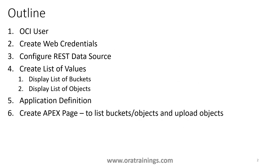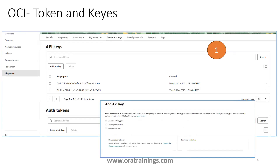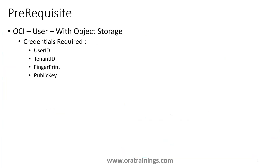We'll be discussing six steps. The first is the OCI user, which is a prerequisite for our Oracle Apex demo connecting with object storage of OCI. You require four credentials: user ID, tenant ID, fingerprint, and public key. To get these, navigate to OCI infrastructure, click on your user account, then My Profile, Tokens and Keys.